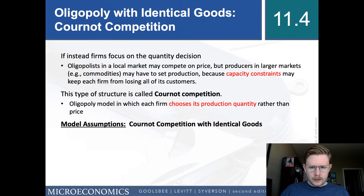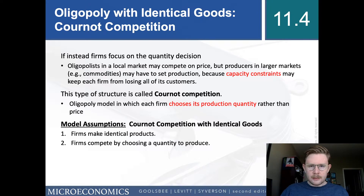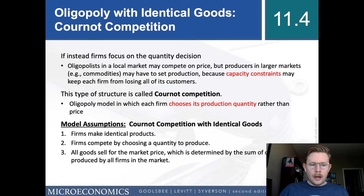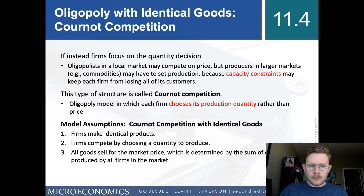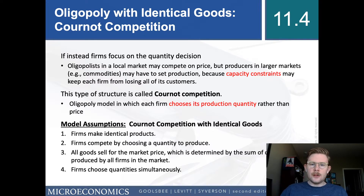What are the model assumptions? Firms make identical products. They compete by choosing a quantity to produce. All goods sell for the market price, which is determined by the sum of quantities produced by all firms in the market, and firms choose quantities simultaneously.